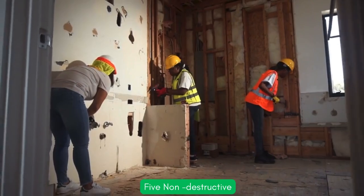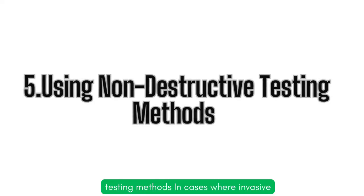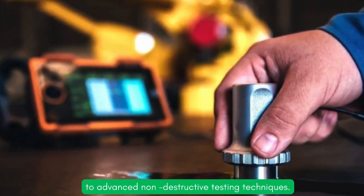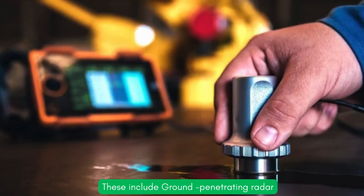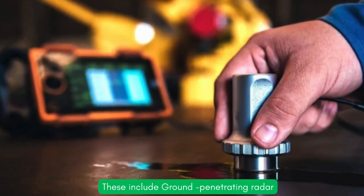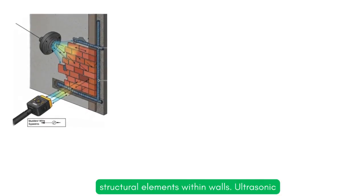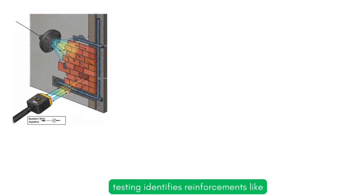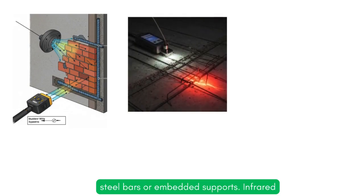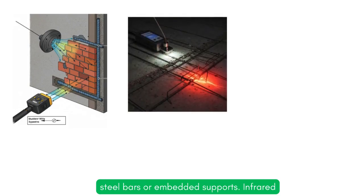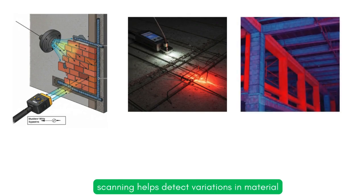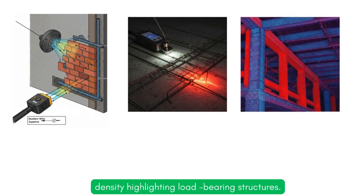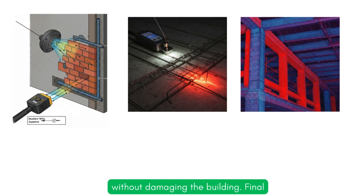Using non-destructive testing methods: in cases where invasive inspections aren't ideal, engineers turn to advanced non-destructive testing techniques. These include Ground Penetrating Radar, which uses electromagnetic waves to detect structural elements within walls; ultrasonic testing, which identifies reinforcements like steel bars or embedded supports; and infrared scanning, which helps detect variations in material density, highlighting load-bearing structures. These tools provide an additional layer of certainty without damaging the building.